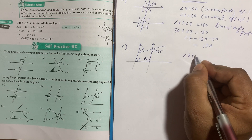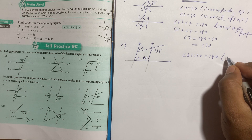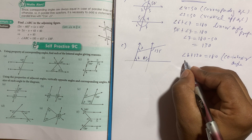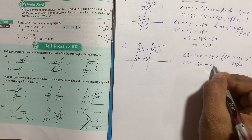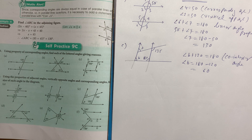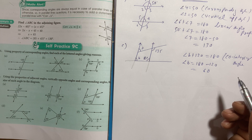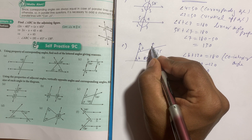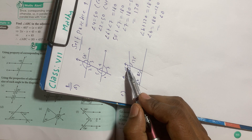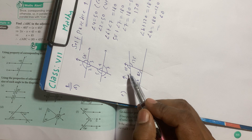Using the co-interior angle property: angle B plus 120 degrees equals 180 degrees. So angle B equals 180 minus 120, which gives 60 degrees. For angle A: 135 degrees is given, and since the two lines are parallel with a transversal, angle A plus 135 degrees equals 180 degrees using the co-interior angle property. So you can easily find the value of angle A.